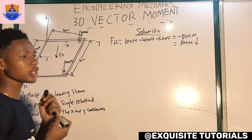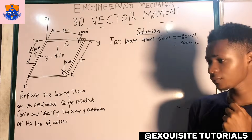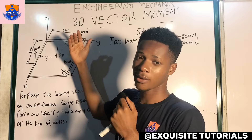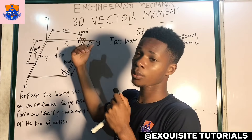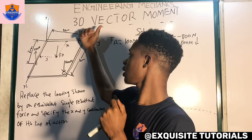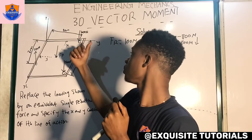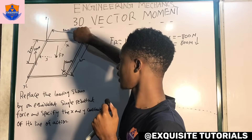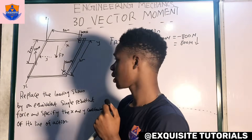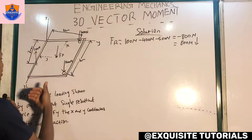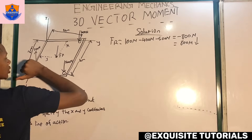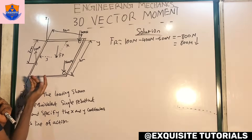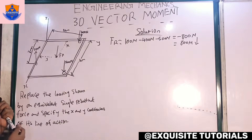Using the right-hand rule: if you position your right hand so the curled fingers show the direction of the force, the thumb gives the direction of the moment. For the y-axis, any force going into the plane in one direction produces a positive moment, and the opposite direction gives a negative moment. For the x-axis, a force causing rotation one way is positive, and the other way is negative.